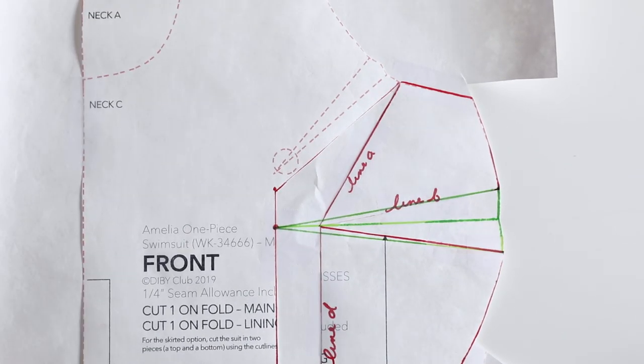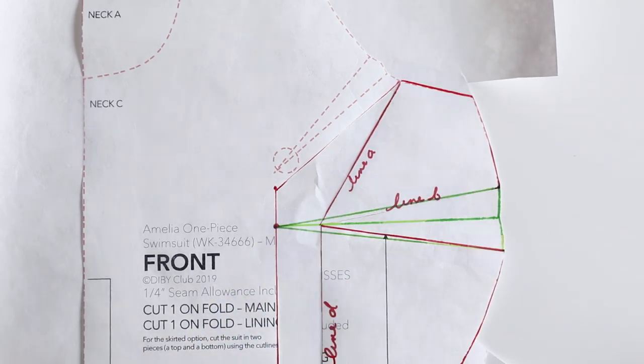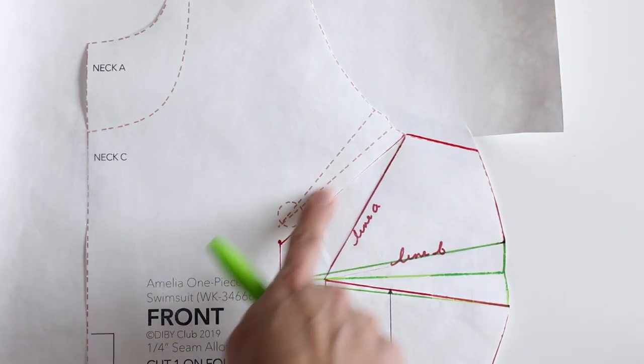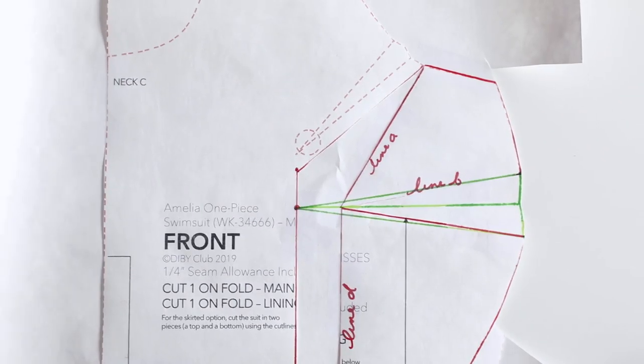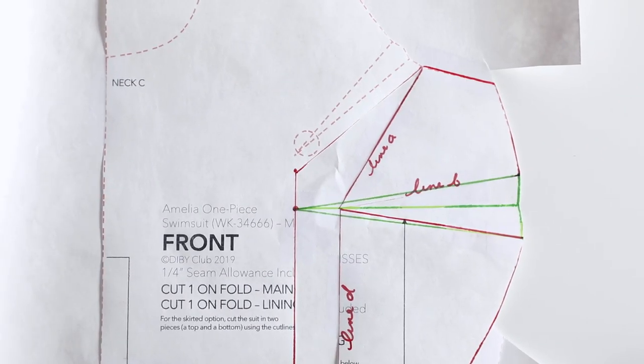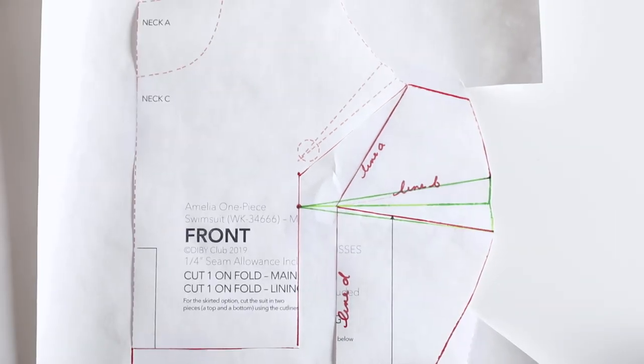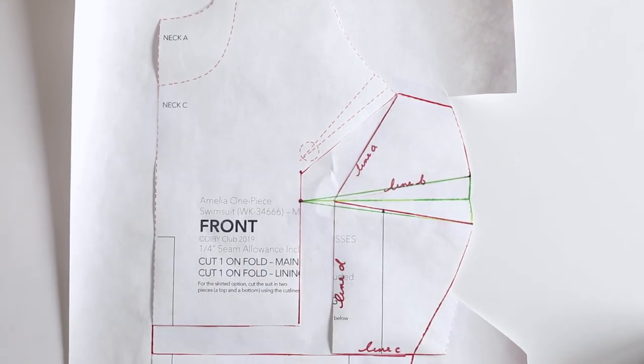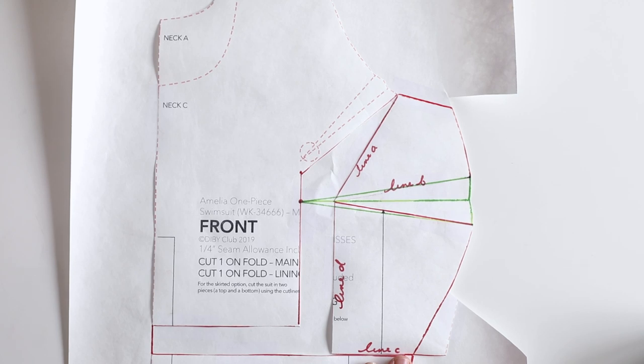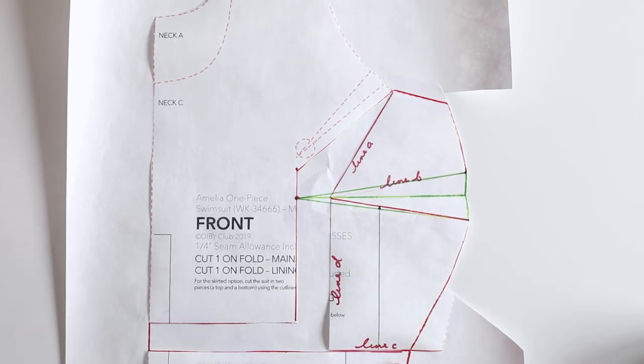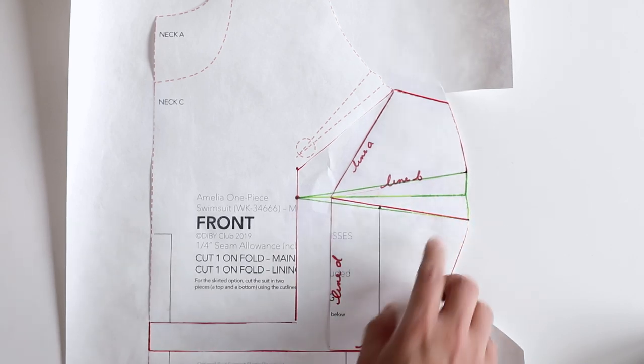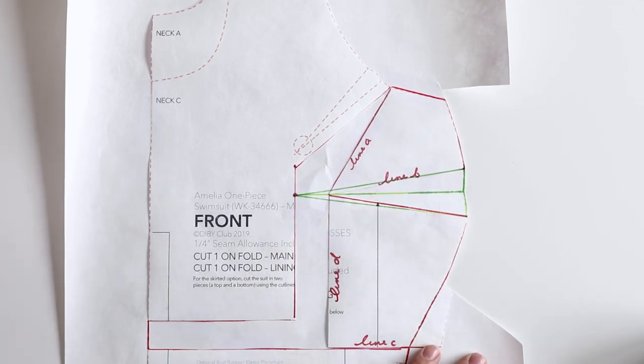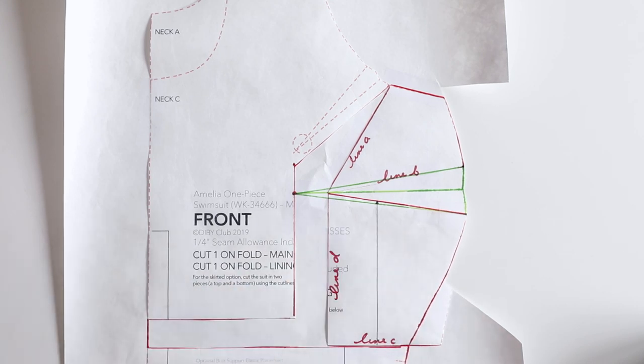So you will go ahead and sew in your new side dart and the original arm side dart. And this is going to give you all of the extra room that you will need for your full bust adjustment. And then you can just continue forward with the rest of the pattern. You will not need to make any adjustments to your back pattern piece. I know it seems like they won't match up. But with this dart sewn in, your existing back pattern piece is going to match up perfectly with this newly adjusted front pattern piece.